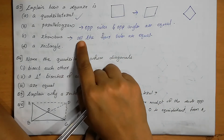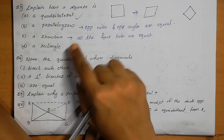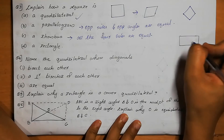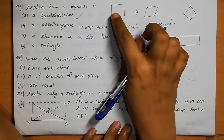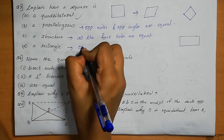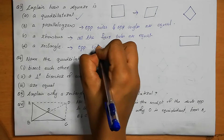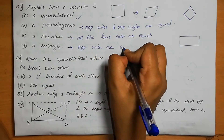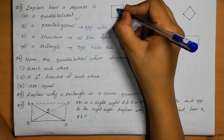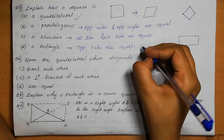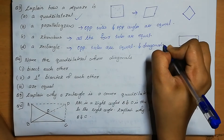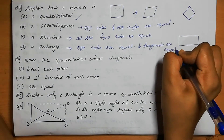A square is a rectangle. Why? Because in a square, opposite sides are equal and diagonals are equal. Opposite sides are equal and diagonals are equal — so a square is a rectangle.